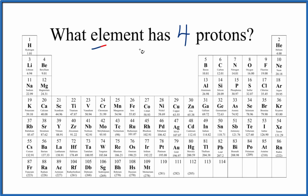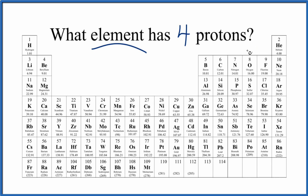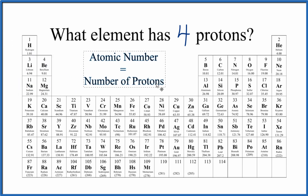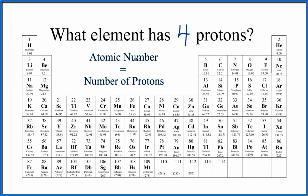Let's take a look at what element has four protons. Here's how we do it. You need a periodic table, and you need to realize that on the periodic table, the atomic number equals the number of protons. The atomic number is above the element symbol, and it increases as we go across the periodic table. It's always a whole number.